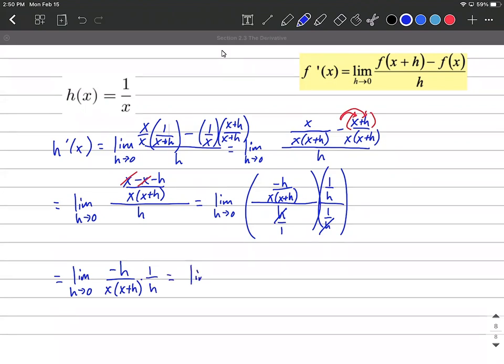As I do that multiplying, what's going to happen is we have an h in the numerator and an h in the denominator, which create a 1. So we can basically get rid of those. But that will leave us with negative 1 in the numerator over x times x plus h in the denominator. From there, we can plug in 0 for our h.